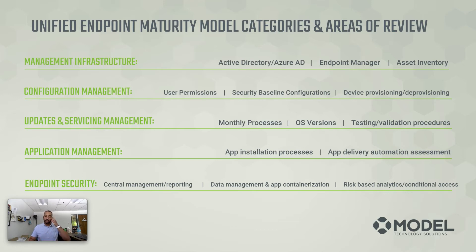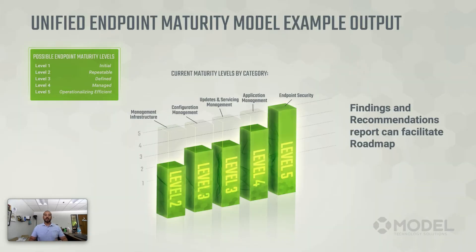This is a core foundational, basic introduction-level video on management infrastructure — that's where we need to start for the purpose of the video series. The maturity model output gives you a rating from level one through five in each of the different categories we've identified: management infrastructure, configuration management, updates and servicing, application, and endpoint security. An example of the output would be a findings and recommendations report to help facilitate movement down the maturity model.